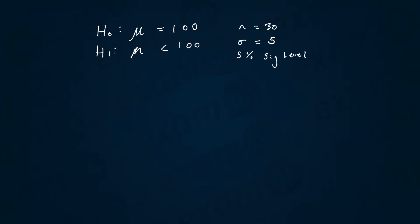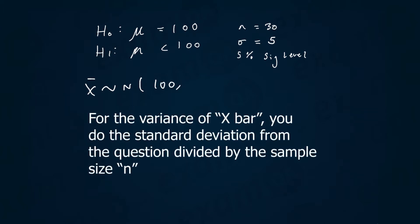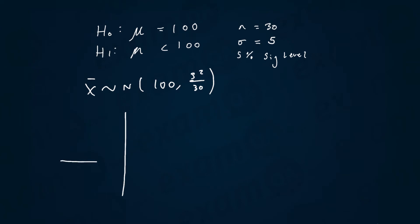Straight away you should always write out the distribution of the sample mean. So I'm going to write x̄ is normally distributed with mean 100 and variance 5 squared over 30. I'm also going to sketch this out on a normal distribution curve.